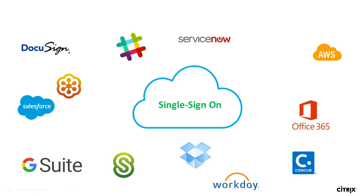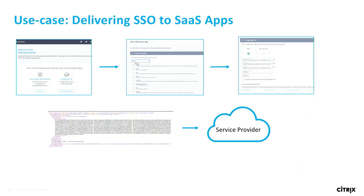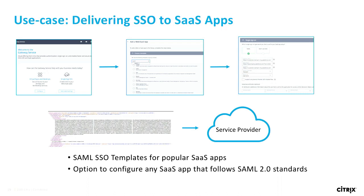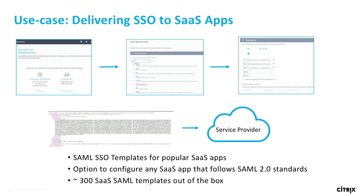Now let's look at single sign-on and how that process works. From a single sign-on perspective, it's all about SaaS, and the usage of SaaS is proliferating. All of these common applications are supported as predefined templates within the access control console. When you go into the gateway service console, you'll see a fairly simple three-step process to publish these applications and configure them so end-users can use them. We currently support SAML 2.0 and have close to 300 built-in templates. You can let us know if you'd like us to add applications, or you also have the option to directly configure and select your own app.